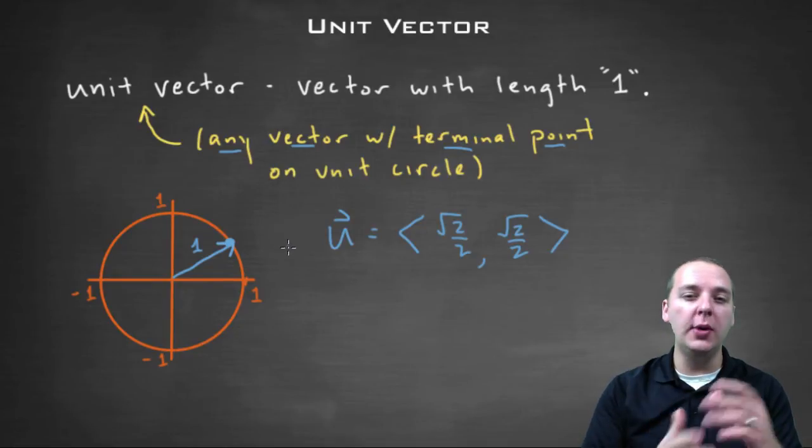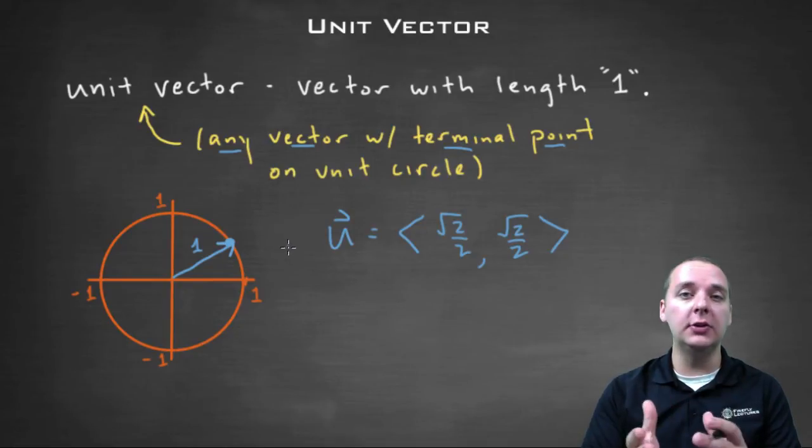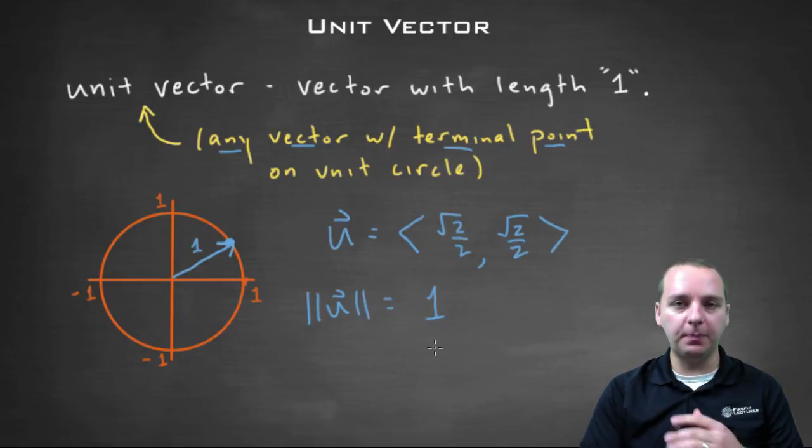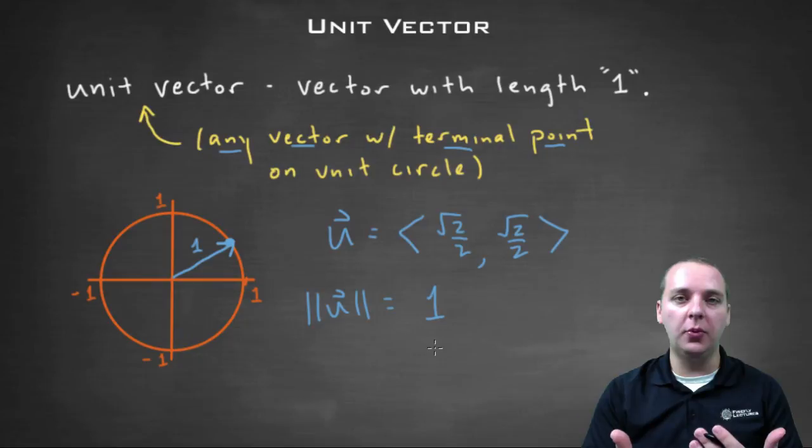If you ever have a weird vector and you're not really sure if it's a unit vector, no big deal. Just take its magnitude, which we talked about how to do in a previous video, and you should get the number one. If you don't get the number one, then it's simply not a unit vector.